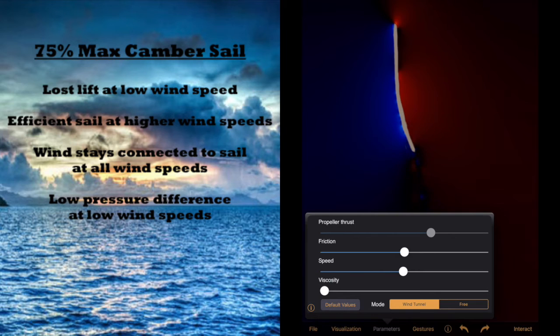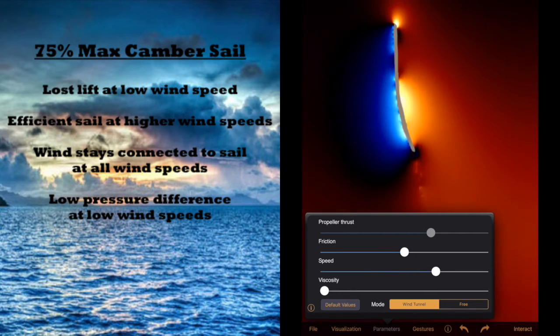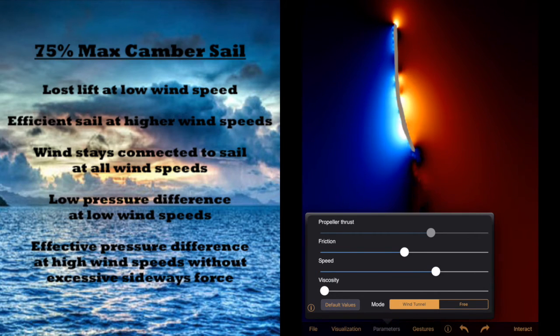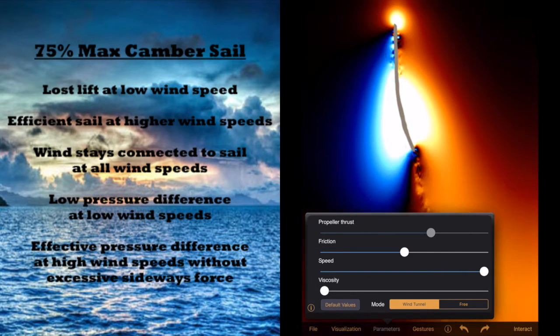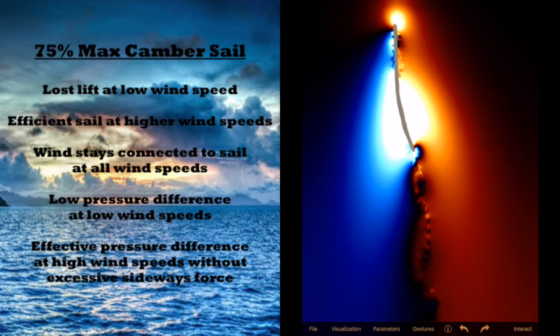The difference comes when we turn the wind speed up to the higher levels. In the past examples, we had too much camber which created intense differences between the highs and the lows which would have created too much sideways motion. If we take away the speed slider, we can see that the particles join back together and create a relatively smooth exit to the sail, highlighting its efficient operation at high wind speed.